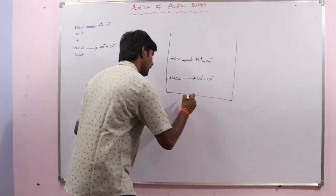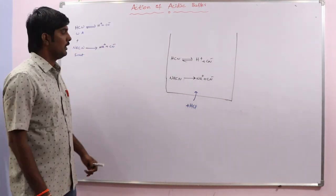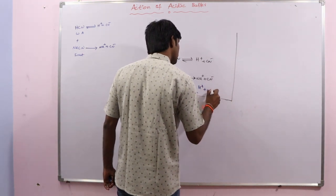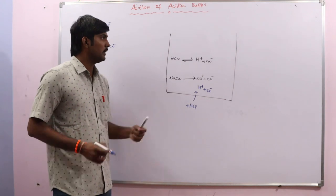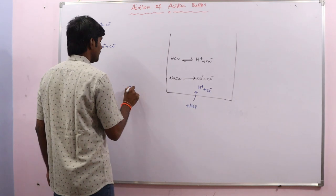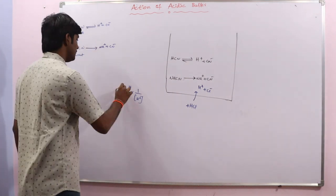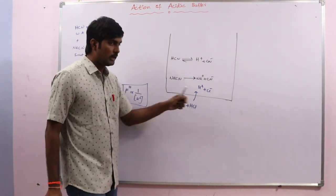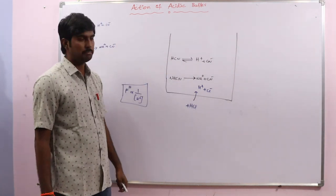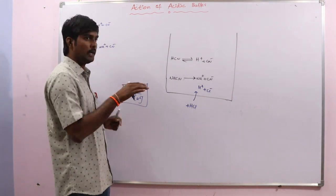Now let us assume we are adding a strong acid — for example, HCl — to this buffer solution. HCl is a strong acid and dissociates to give H⁺ and Cl⁻. We know that pH is inversely proportional to the concentration of H⁺ ions. So when we add HCl, H⁺ ion concentration increases, which means pH should decrease.